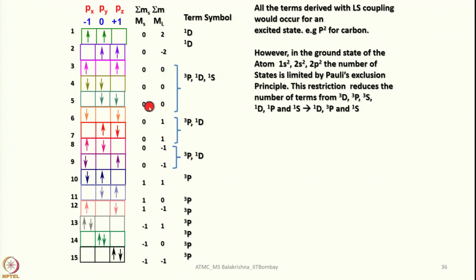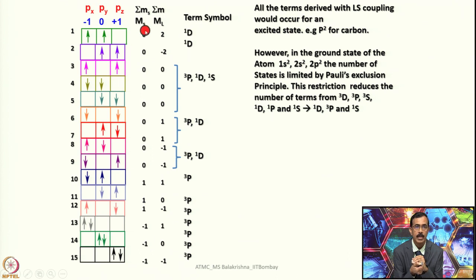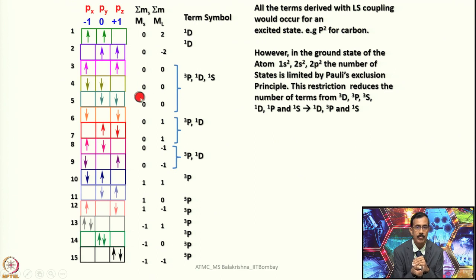I have listed all possible excited-state electronic configurations for the P2 system. For P2 we calculated 15 microstates — 15 possible ways to arrange the electrons including the ground state. I have given sigma ms and sigma L values for each arrangement, and accordingly the term symbols are listed. Each electronic configuration yields a term symbol, so we should have 15 different term symbols in total.